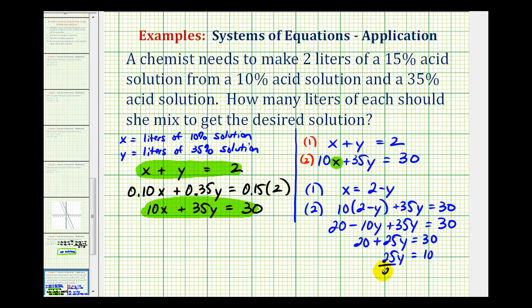Divide both sides by 25. And we have y equals 10/25, which does simplify—there's a common factor of 5 here. So we have y equals 2/5.